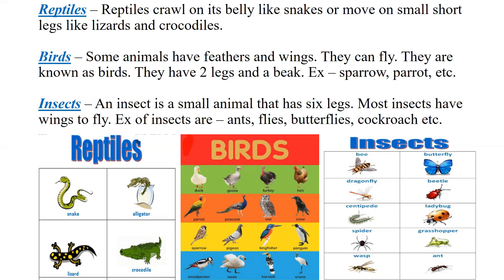Some animals like sparrow, pigeon, peacock, and parrot have feathers and wings and can fly — these are called birds. They have two legs and a beak and eat food grains and insects. Insects are small animals that have six legs. Most insects have wings to fly. Examples of insects are ants, flies, butterflies, mosquitoes, and cockroaches.